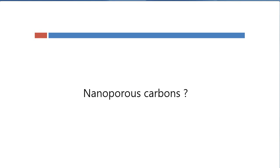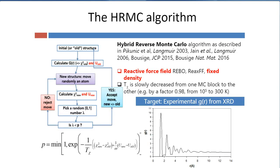It all started with a collaboration with Keith Gubbins of North Carolina State University, where with PhD students Jorge Pikunic and Swaroop Jain, we developed this hybrid reverse Monte Carlo technique — a way to construct a porous carbon trying to converge to a function given from experiment. In this case, it is the pair correlation function, which is the Fourier transform of the diffraction signal when you're doing X-ray diffraction on a porous carbon.